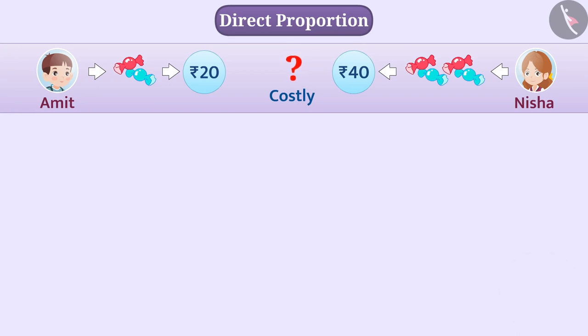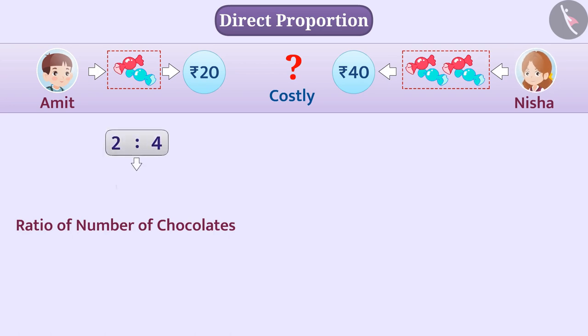Let me tell you, we can say that the ratio of the number of chocolates purchased by Amit and the number of chocolates purchased by Nisha is 2 is to 4, i.e. 1 is to 2.